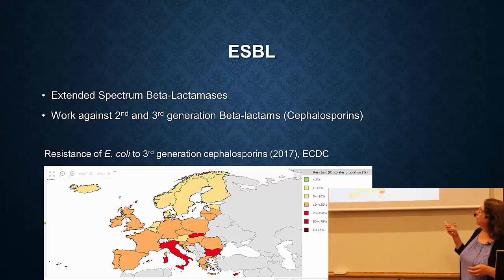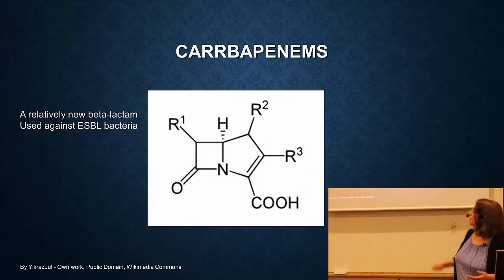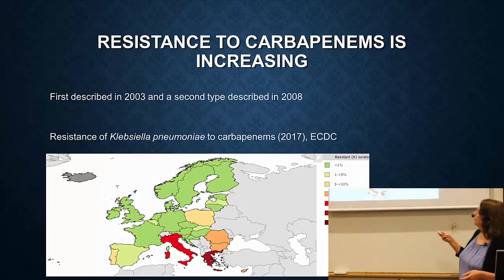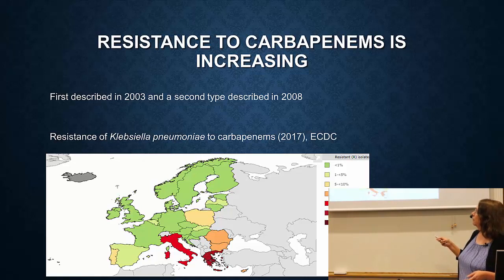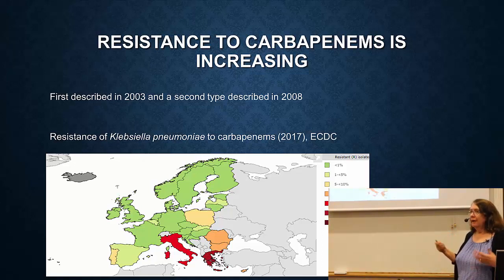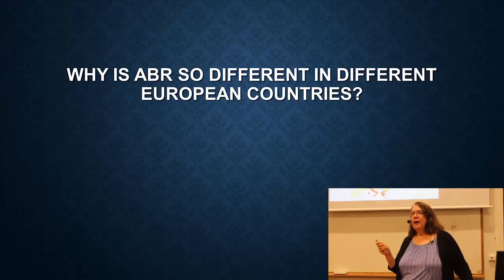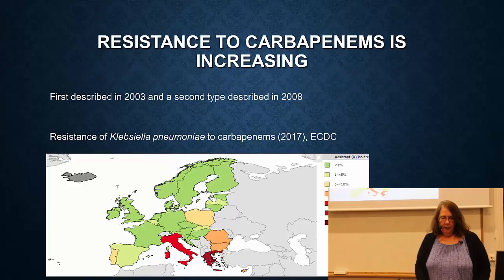Once you get to cephalosporins, there are now further generations of beta-lactams, specifically one called carbapenem. This is a relatively new antibiotic used if you have an ESBL bacterial infection. And already resistance is terrible in southern Europe - in Italy and Greece in particular - whereas in Sweden it is not so bad. These infections could be resistant to everything. So that is the reality, unfortunately.